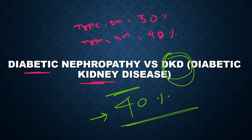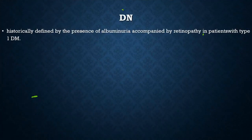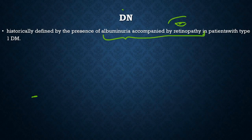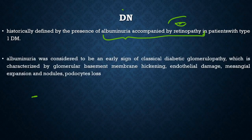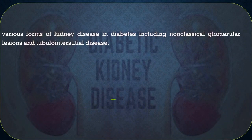Regarding when to use the term 'diabetic nephropathy': this term has been used historically to describe the presence of proteinuria associated with retinopathy in type 1 diabetes patients. Since albuminuria indicates glomerular involvement, this term classically indicates glomerular involvement in diabetes.